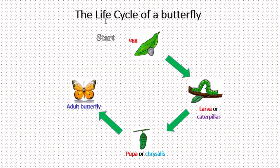This is the life cycle of a butterfly and it starts with just a simple egg. A simple egg becomes a larva or what most people know as a caterpillar.